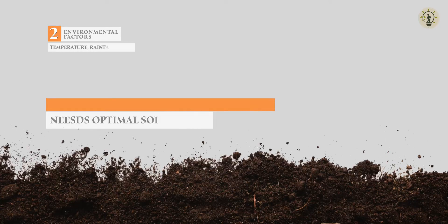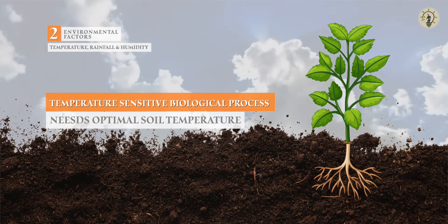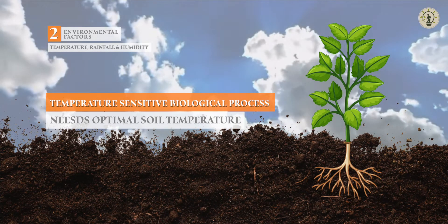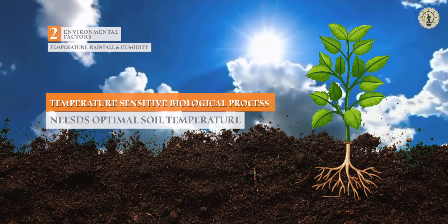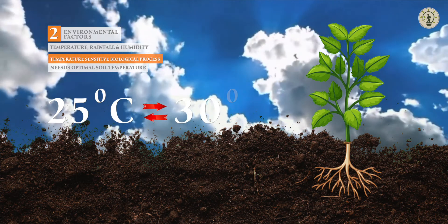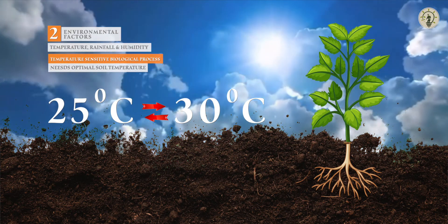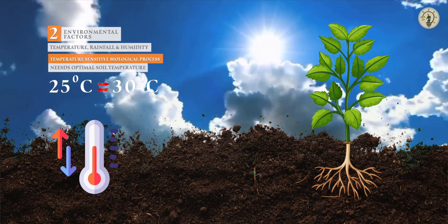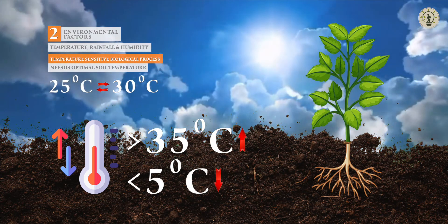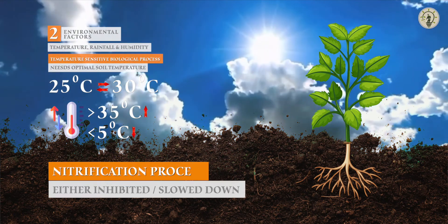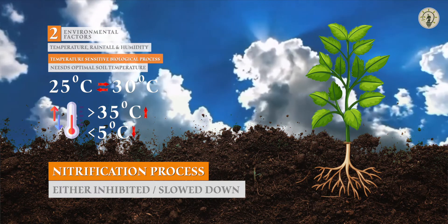The second factor is environmental factors, which include temperature, rainfall, and humidity. Nitrification is a biological process that is temperature sensitive. The optimal temperature range for nitrification is between 25°C and 30°C. At temperatures above 35°C and below 5°C, nitrification is either inhibited or slowed down.